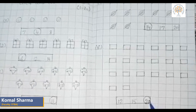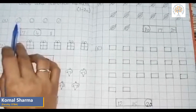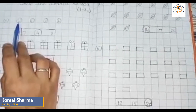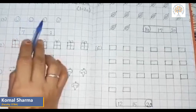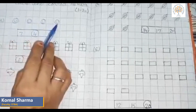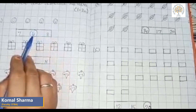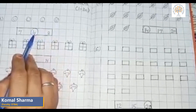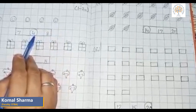Let us repeat again. How many smileys are there? One, two, three, four. There are four smileys. So we will circle the number four.